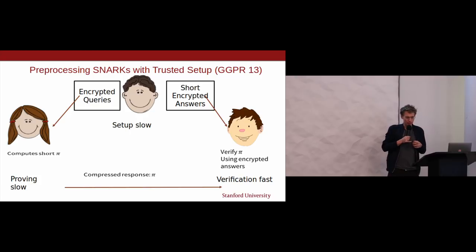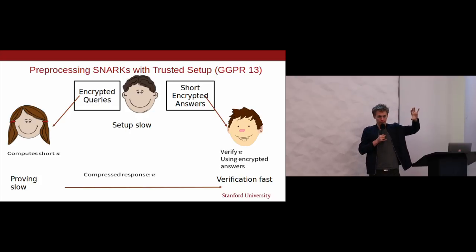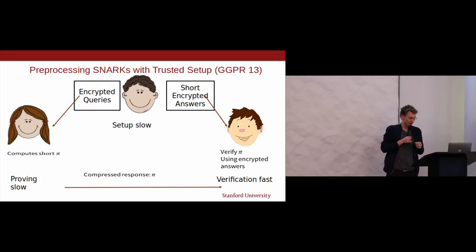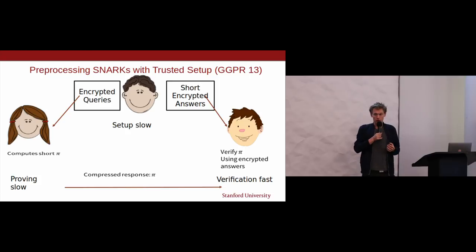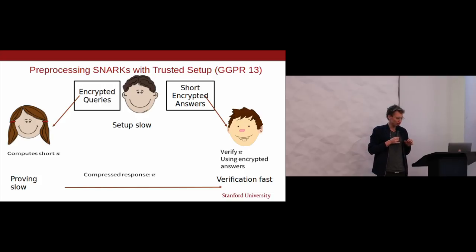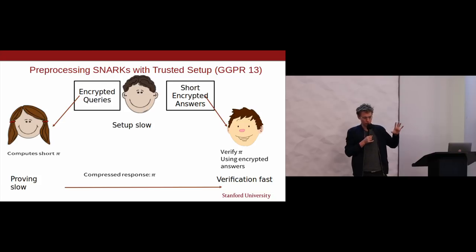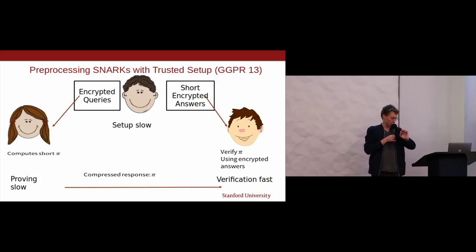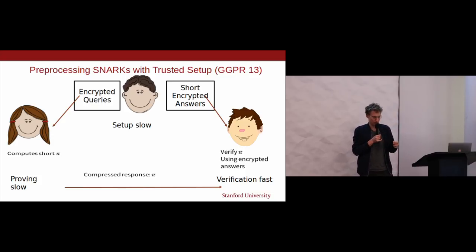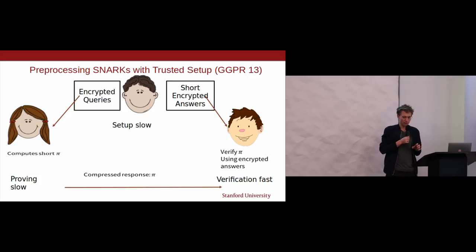Pre-processing SNARKs work at a high level by having a trusted party encrypt queries beforehand using a secret key. Peggy uses these encrypted queries to compute a short proof by computing answers and aggregating them. The trusted setup also produces a short verification key with encrypted answers, and Victor uses these to verify the compressed responses. The proofs can be as small as 188 bytes and take 10 milliseconds to verify, regardless of the complexity of the statement.